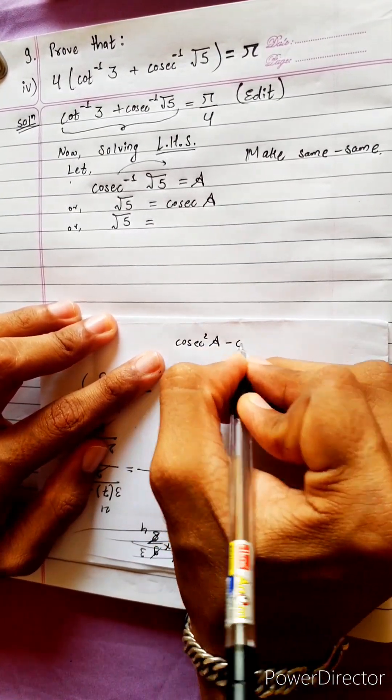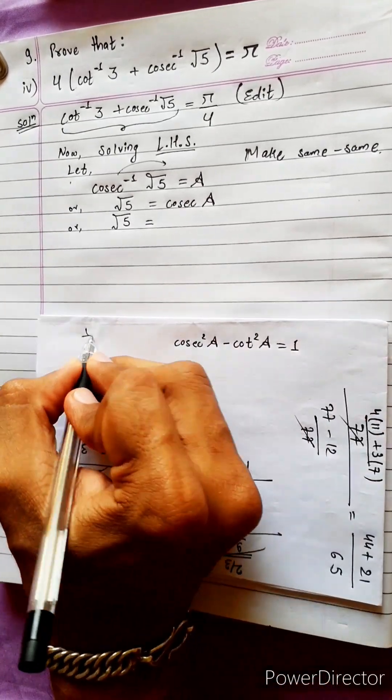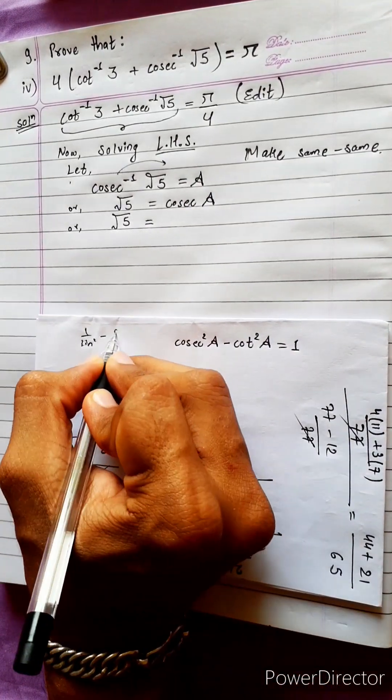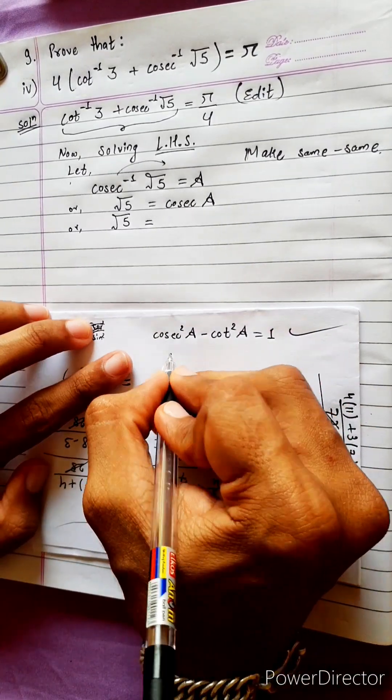Cosec square A minus cot square A equals to 1. This is 1 by sin square minus cos square by sin square. This is the formula. Now, let's solve the problem.